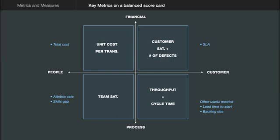Don't go for too many of them — just pick out the key ones from the service level agreement. On the process side, the two key metrics are throughput and cycle time. But you could also go for lead time to start, which is the time that a request waits before you actually start processing it, and the size of the backlog — if you've got a very big backlog, that may be something you want to measure as well.